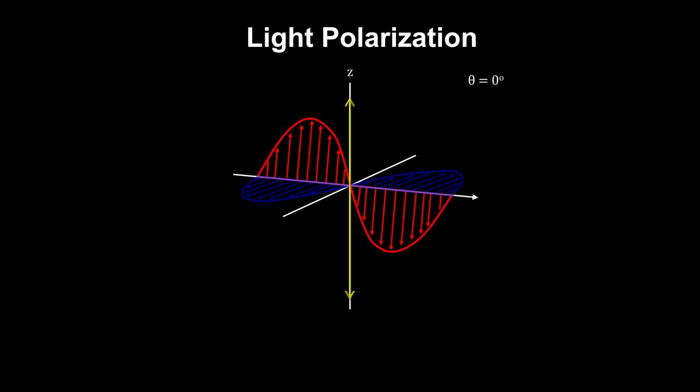We understand light as an electromagnetic wave. The direction of the electric field is called the wave's linear polarity. Here we see the polarity at different angles from a fixed reference.